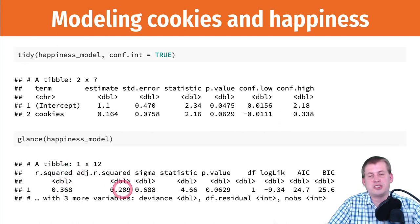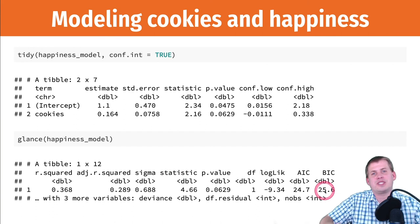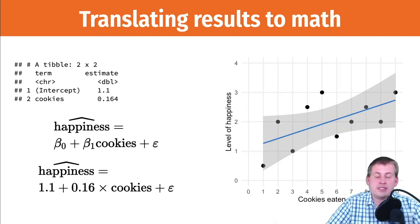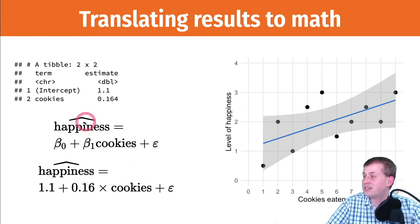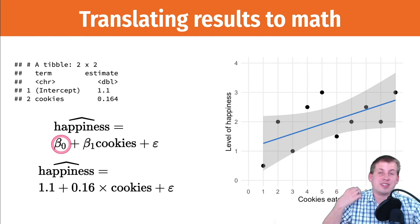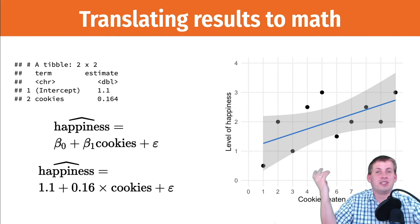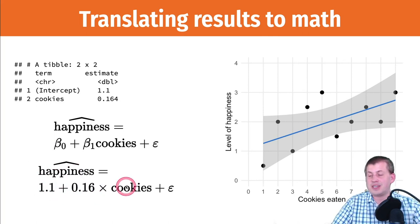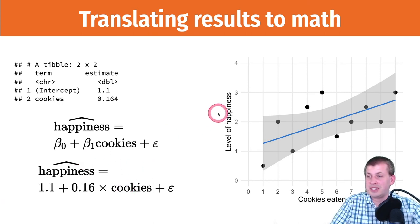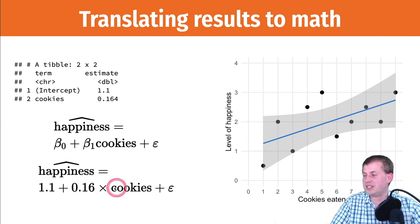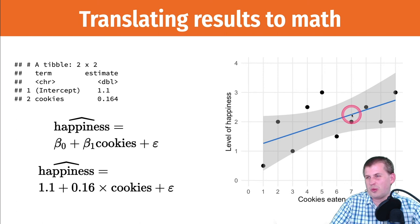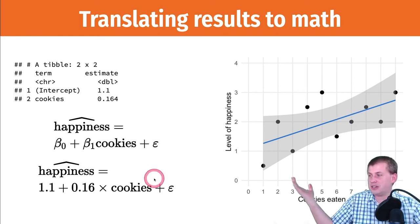Running glance() shows model diagnostics like R-squared, which tells you how good the fit is, plus F-statistics, residual errors, and other numbers. Now we have the formula for cookie-based happiness: happiness = 1.1 + 0.16 × cookies. We can plug in any number — say you ate seven cookies: 7 × 0.16 + 1.1 gives predicted happiness of about 2.3. That's your predicted happiness given the cookies you ate.